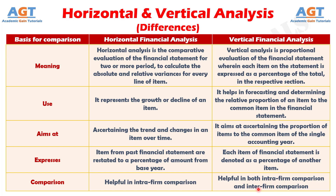Financial analysis is helpful in accurately ascertaining and forecasting future trends and conditions. The primary aim of horizontal analysis is to compare line items in order to ascertain the changes in trend over time. As against, the aim of vertical analysis is to ascertain the proportion of an item in relation to a common item in percentage terms. The two analyses are helpful in getting a clear picture of the financial health and performance of the company.